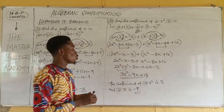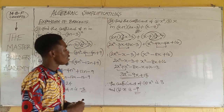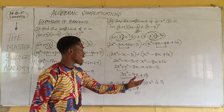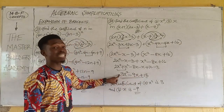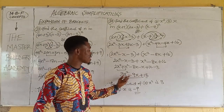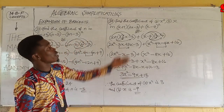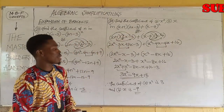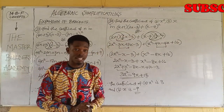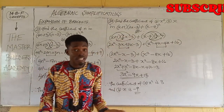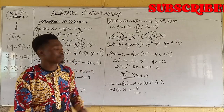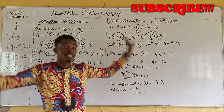And for b), the coefficient of x is minus 9. What happens if we have to find the constant? That means the constant is 13.